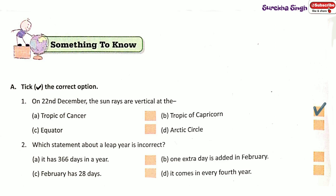Question 2: Which statement about a leap year is incorrect? Option C: February has 28 days.